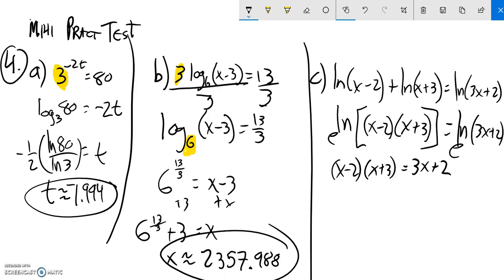And if I want to solve this quadratic now, I'm going to multiply this out. So multiply this out. I get x squared plus x minus 6 equals 3x plus 2. Subtract 3x, subtract 2. x squared minus 2x minus 8 equals 0. This factors to x minus 4 times x plus 2 equals 0.